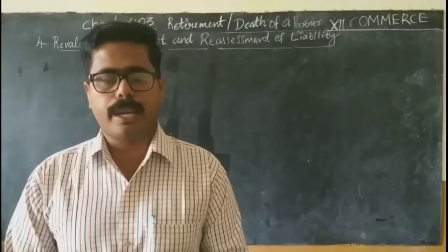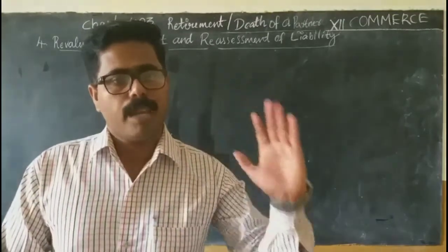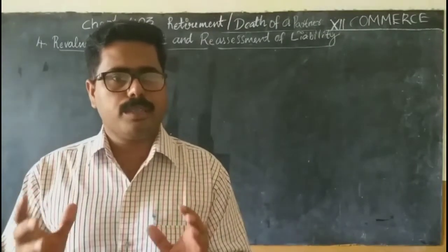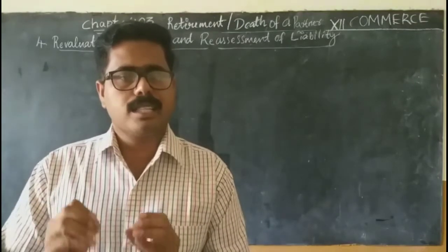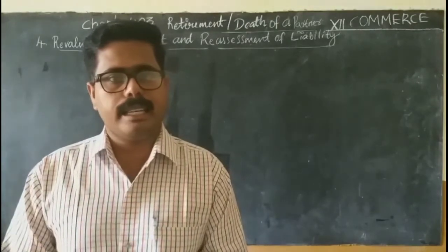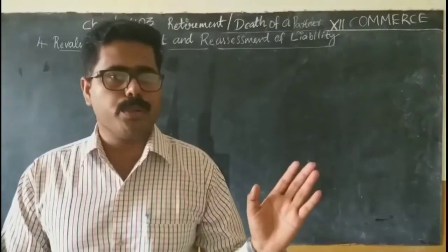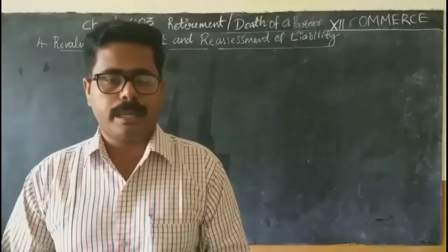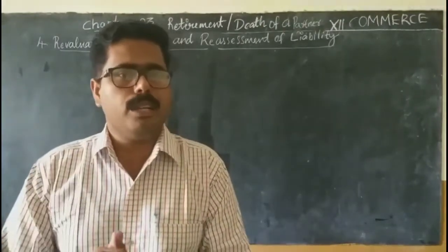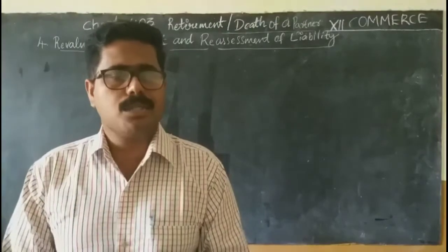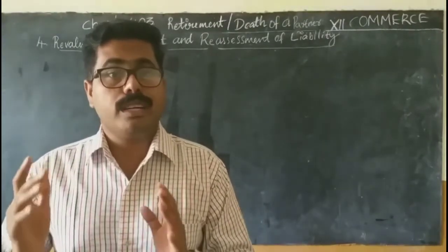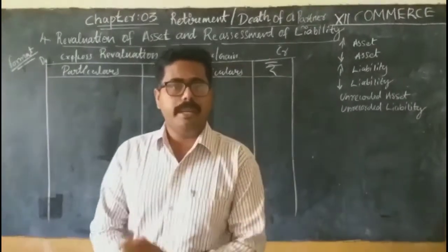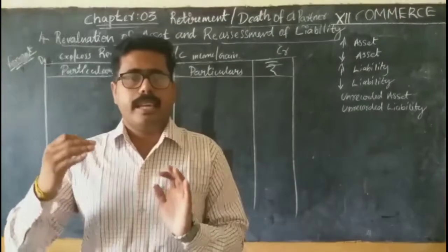This is done with the help of one account called a revaluation account. It is the same as the admission chapter, with one difference: at the time of retirement, whatever profit or losses arise will be distributed to all partners in their old ratio, whereas in the admission chapter it is also distributed to all partners in the old ratio — meaning the newly admitted partner has no right to the profit or loss of revaluation.